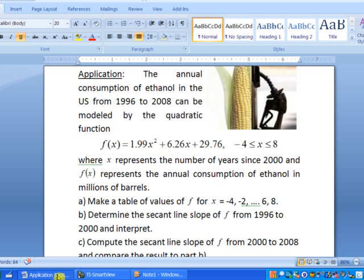In part A, it says to make a table of values for x, running from negative 4 to 8 in increments of 2. So let's go ahead and do that.